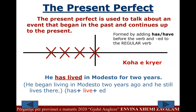Let's look at an example. 'He has lived in Modesto for two years.' He began living in Modesto two years ago and he still lives there. We have the auxiliary verb 'has' in third person singular, plus 'lived' — the past participle with -ed at the end.